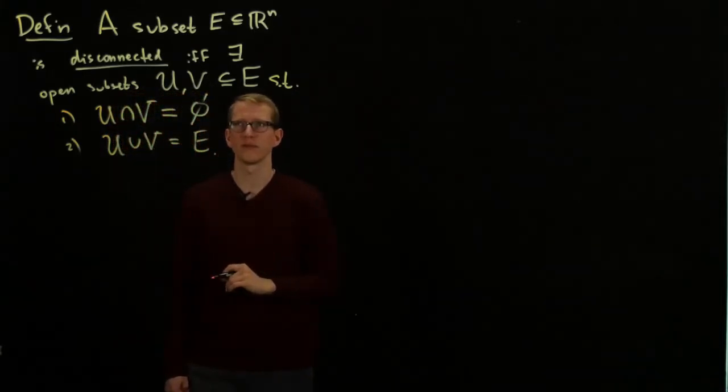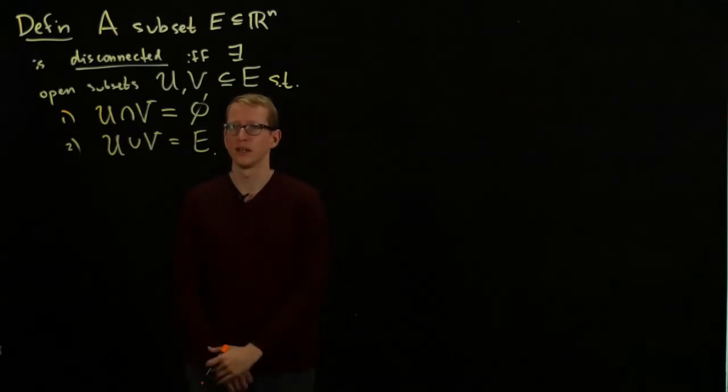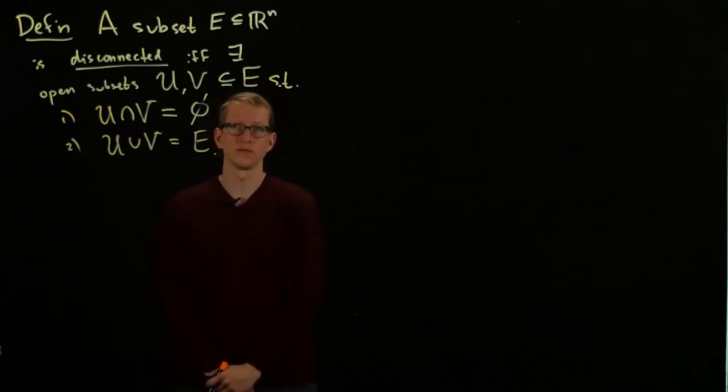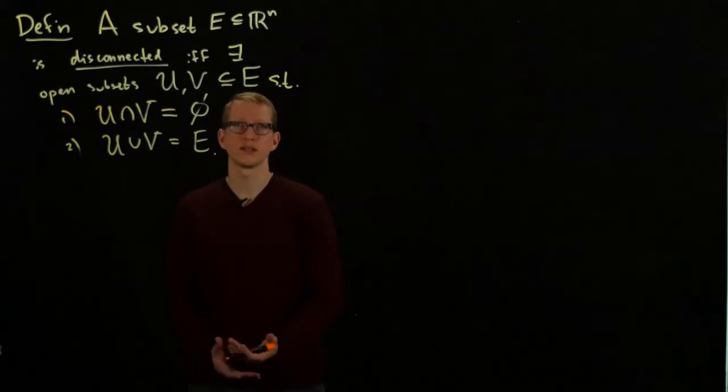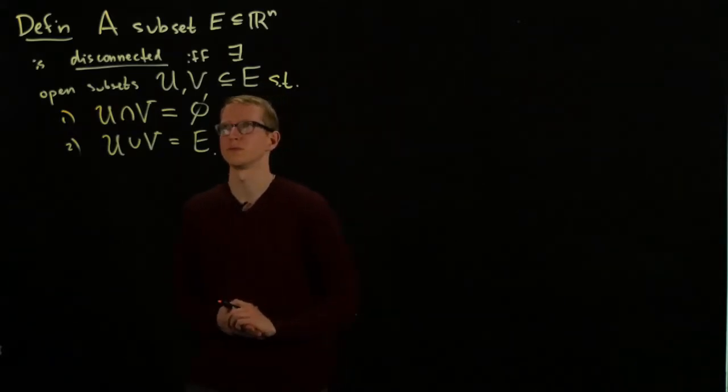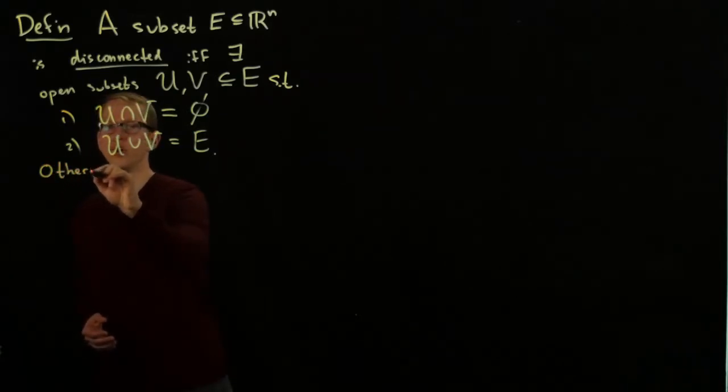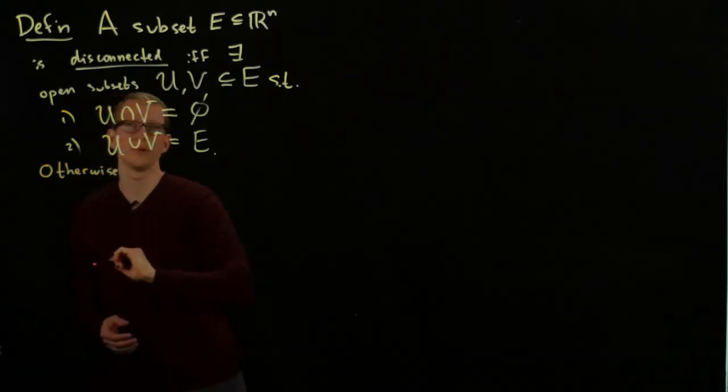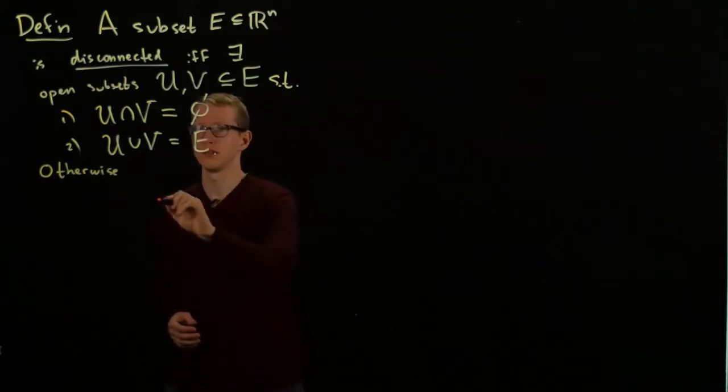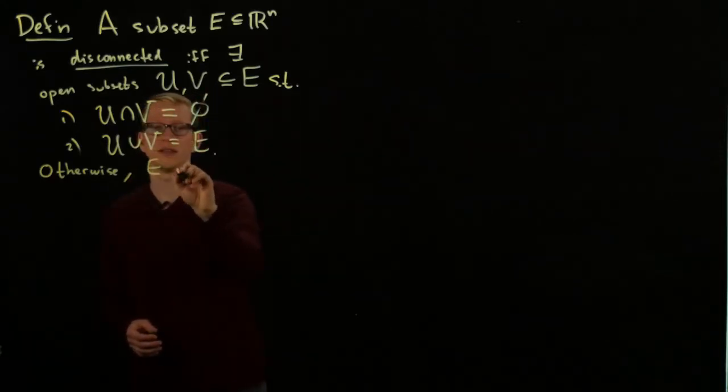In fact, there are many equivalent definitions of what it means for a subset to be disconnected, for instance in terms of separations. But it's not necessary to know all of them for now. Otherwise, if no such open subsets exist, E is connected.